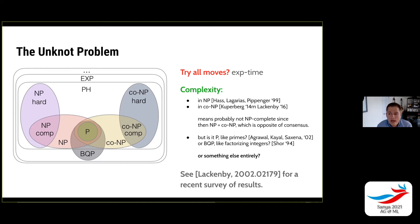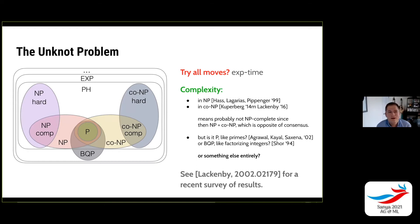It's also in co-NP. This means it's probably not NP-complete, because then NP would equal co-NP, which is the opposite of the consensus. In complexity theory, the consensus is that P is not equal to NP. But there are still open questions. Is this problem in P, like the primality testing problem? Primality testing was shown to be polynomial time in 2002 by Agrawal, Kayal, and Saxena. Other problems may not be in P but are in BQP — like factoring integers, as shown by Shor.